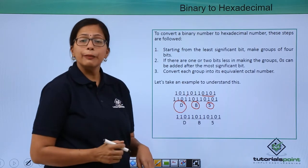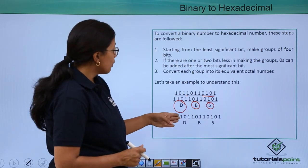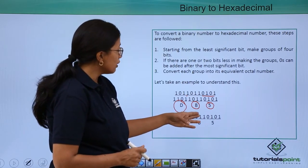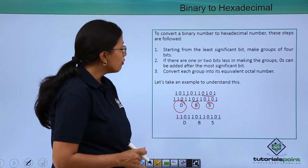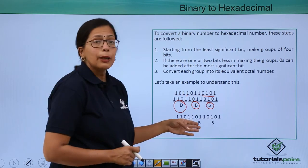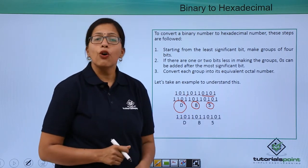So what will be my answer? The binary number 1101101101010101 will be equivalent to DB5 to the base of 16.